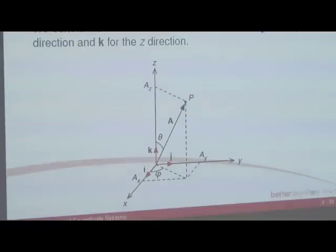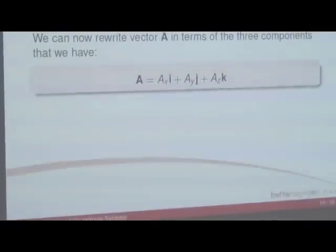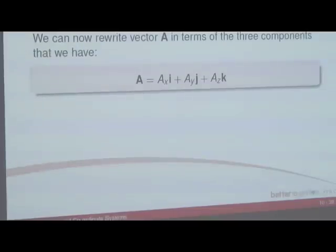We can decompose our displacement vector A into three vectors. So we've got A equals Ax times i, plus Ay times j, plus Az times k, where i, j, and k are the unit vectors and A is the total vector. The terms Ax·i, Ay·j, and Az·k are vectors with magnitudes Ax, Ay, and Az lying along the three axes x, y, and z. This is what's known as vector decomposition.